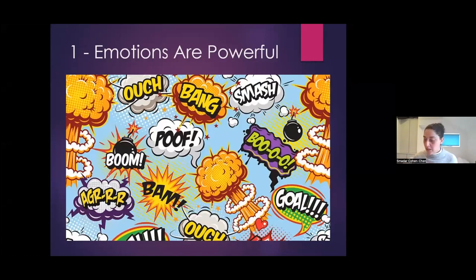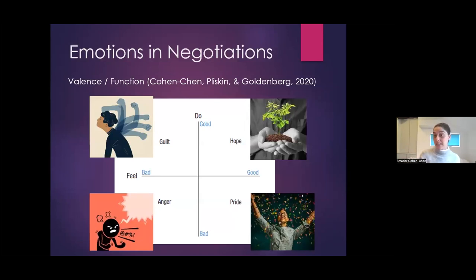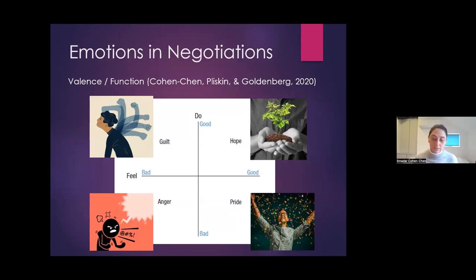The first thing I want to talk about is the power of emotions. When I teach negotiation, there's always someone who says, 'I'm rational, I'm unemotional, emotions have nothing to do with my decisions.' My answer is usually: that's impossible. We all have emotions, and the more we ignore them and don't understand them, the more we are subject to them controlling us. It's better to understand emotions, how they work, and how they are functional or dysfunctional, so we can use them in the right way.